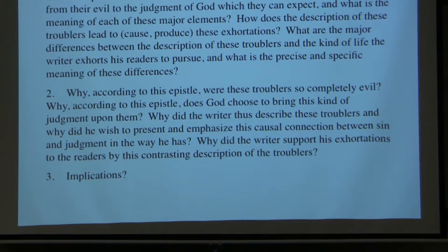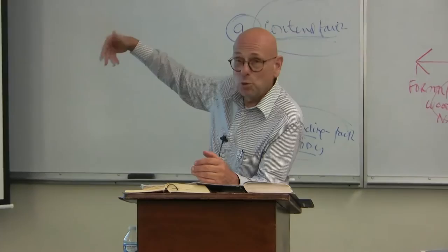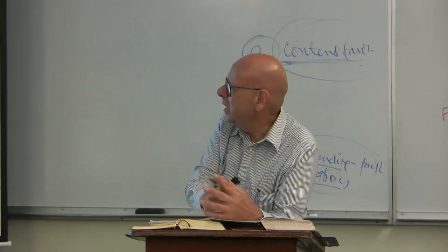Why did the writer support his exhortations to the readers by this contrasting description of the troublers? And what are the full theological implications of the answers to these definitive and rational questions? Again, we don't answer these questions necessarily at this point — at this stage we're simply making observations and raising questions that will serve as a bridge to interpretation.